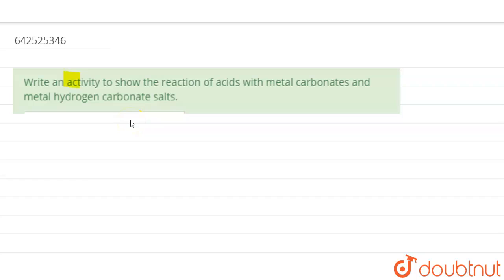Write an activity to show the reaction of acids with metal carbonates and metal hydrogen carbonate salts. So what we need to do is see what reactions are going on when acid reacts with metal carbonates and metal hydrogen carbonates.